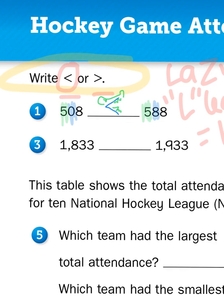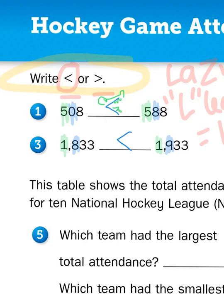1,833 is blank compared to 1,933. Again, I need to start by comparing the place values. There's a 1 in the thousands on the left and a 1 in the thousands on the right. There's an 8 on the left in the hundreds and a 9 in the hundreds on the right. 9 is bigger than 8, so the number on the left is less than the number on the right. I would read this statement: 1,833 is less than 1,933.